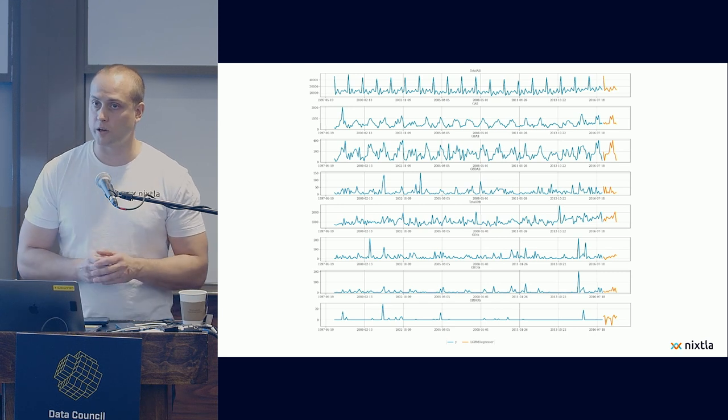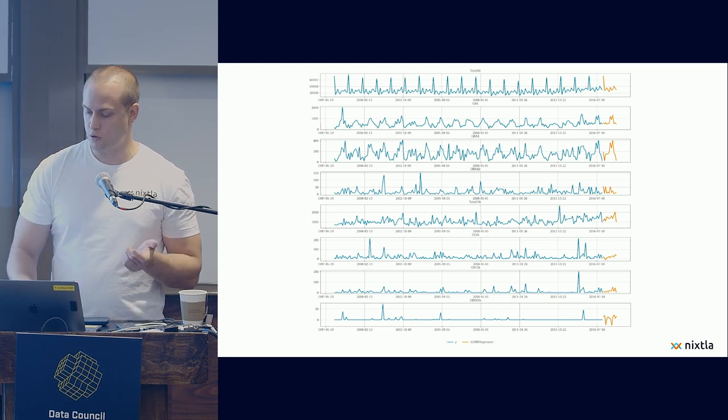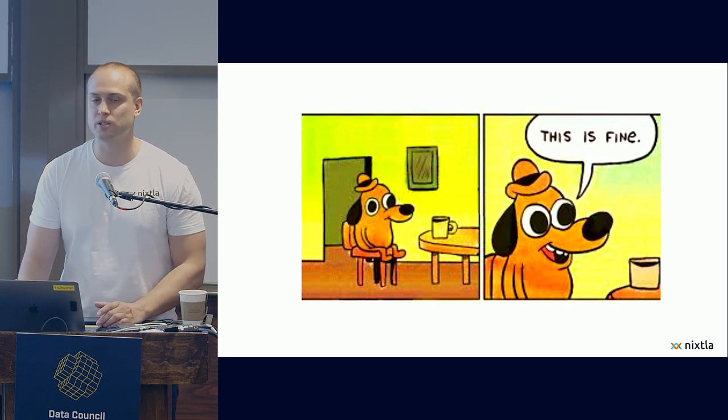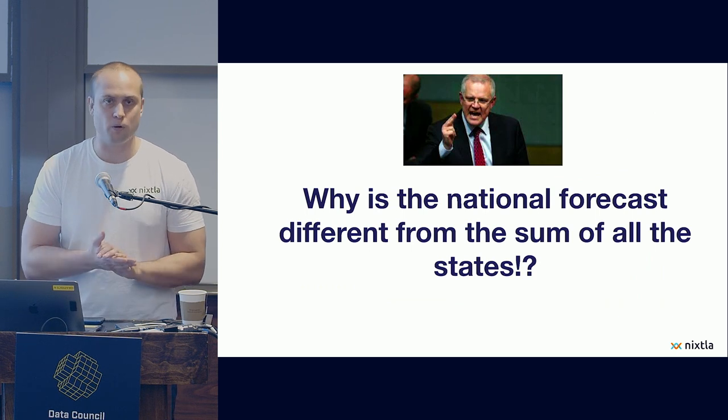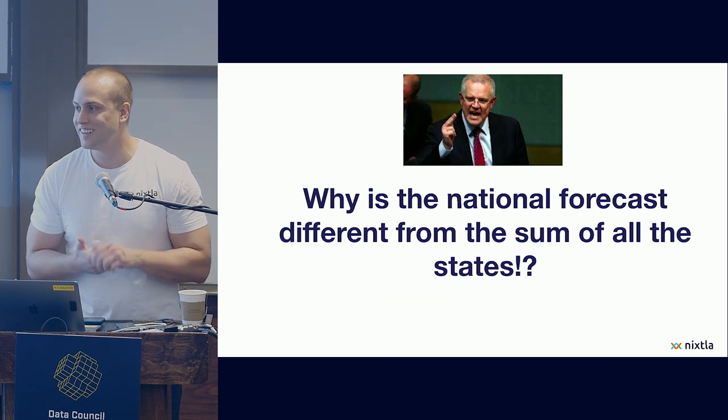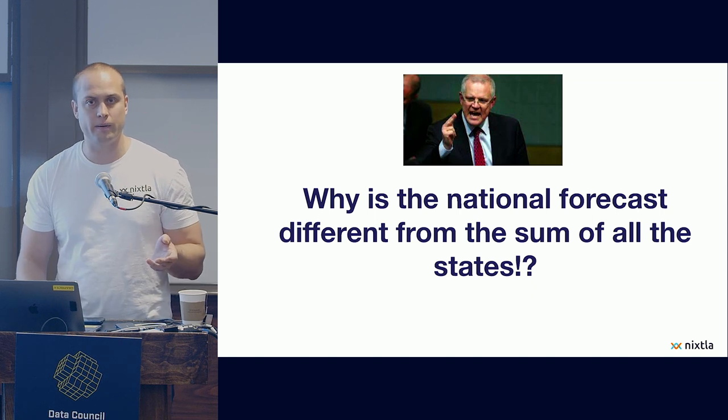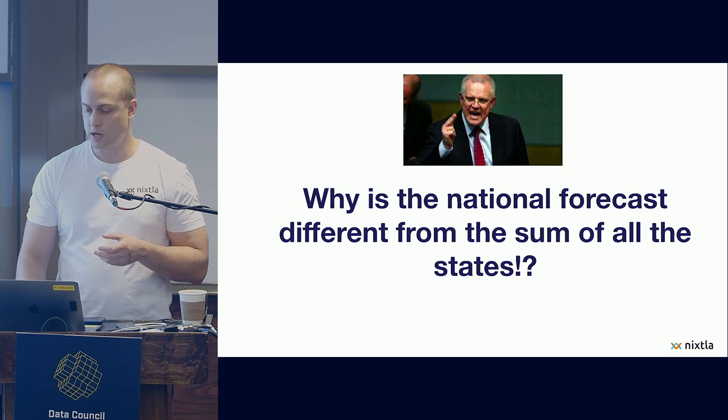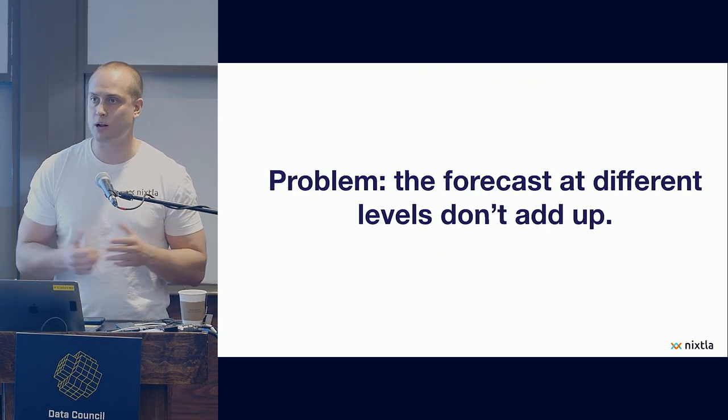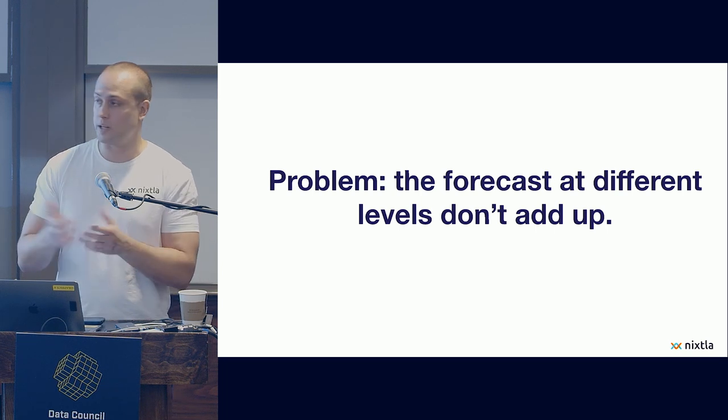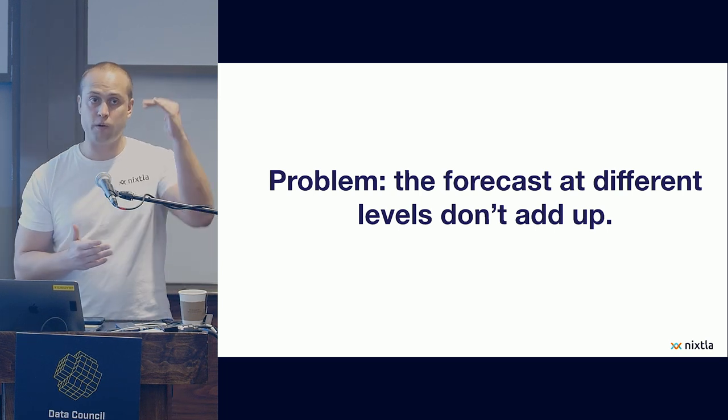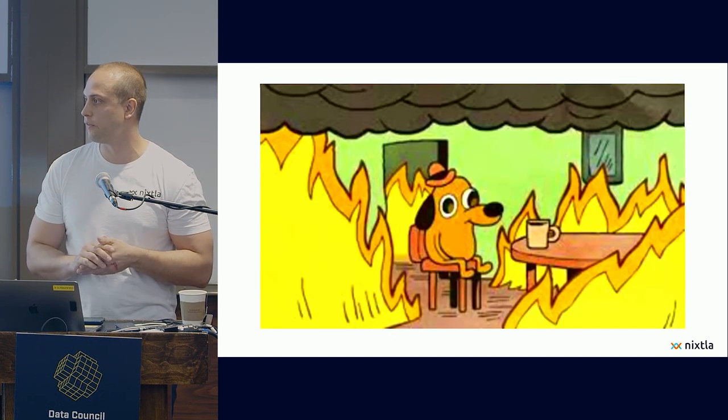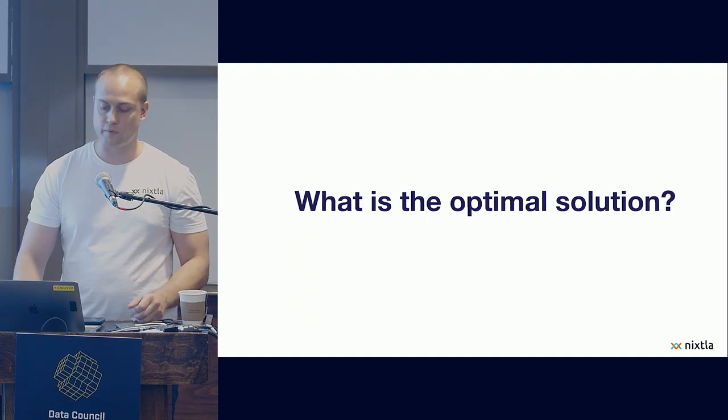So now we were able to create 555 series. So it seems that everything is fine. We have done a good job as ministers of tourism. However, we got a very angry phone call from the president saying that the series that we gave them for the national level don't add up to the series that he got from the state governors. And the problem really is that the forecast at different levels don't add up. And how could they, if we didn't create a reconciled strategy, we forecasted and trained at every different hierarchy.